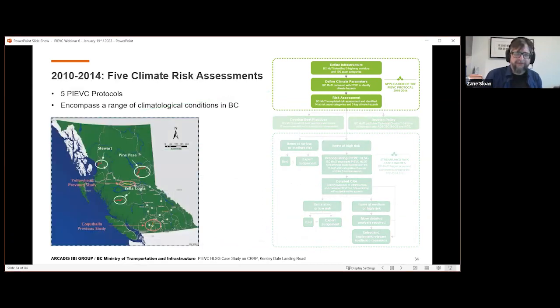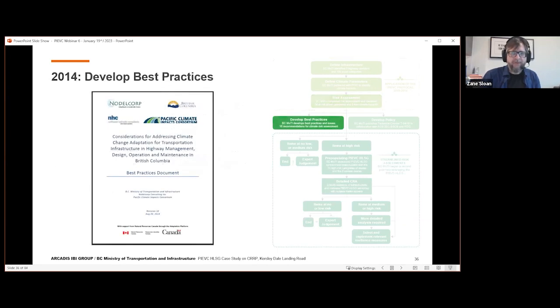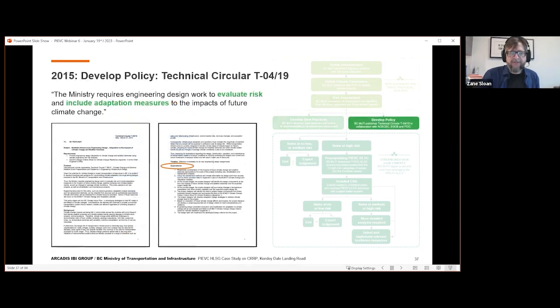This is just to show the five PIEVC protocol assessments that the province undertook between 2010 to 2014 and encompasses a range of climatological conditions of British Columbia. They grouped infrastructure into many categories, almost 100 or so. But in the end, they came to the conclusion that there are 14 categories of high-risk in the province. And five climate hazard events are largely responsible for these high-risk things happening. Once they figured out what was high-risk, that's when they developed these best practices. This is the policy, the technical circular. That was important basically to tell engineers, if you design infrastructure for the province, you've got to take climate change into account.